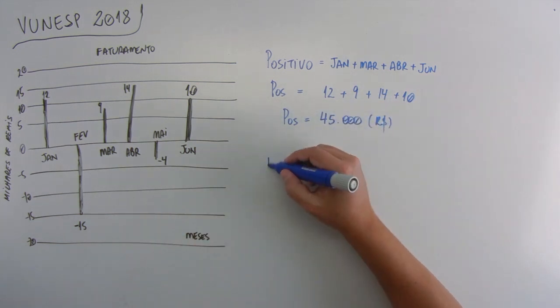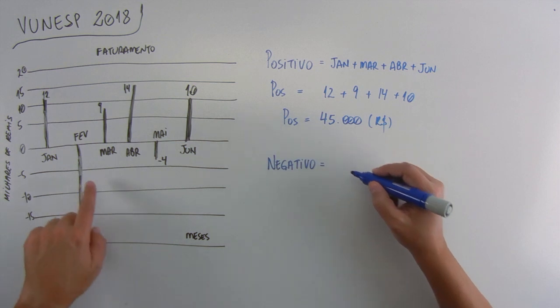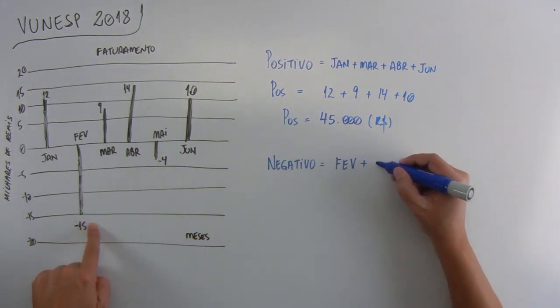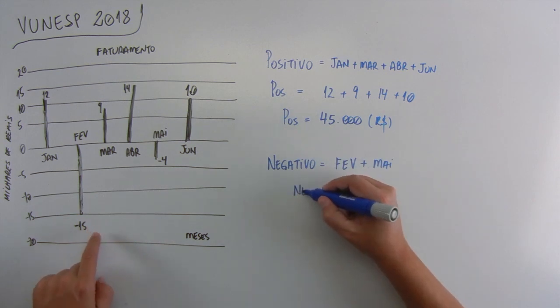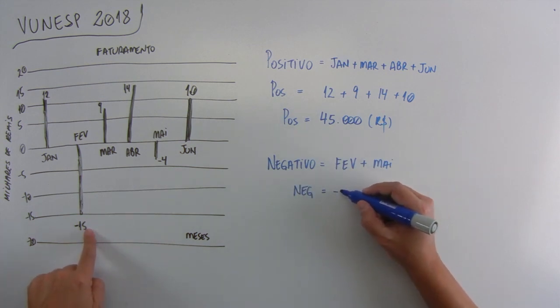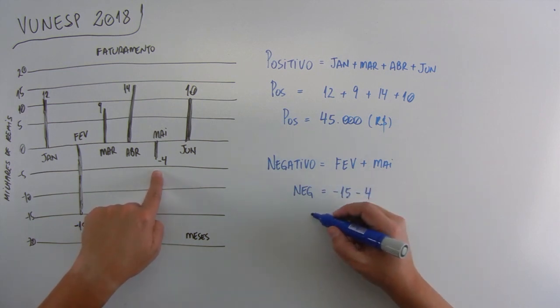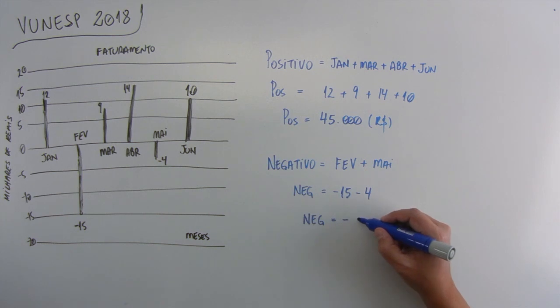E o balanço negativo? Foram os meses de fevereiro e maio. Fevereiro foi menos 15 e maio foi menos 4. Somando esses dois, o balanço negativo é de menos 19 mil.